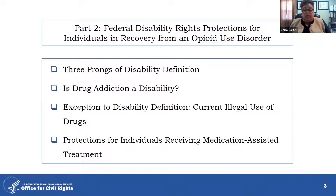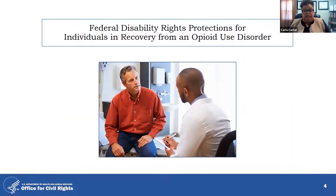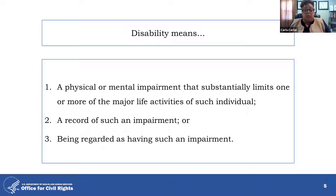Part two of the webinar, Federal Disability Rights Protections for Individuals in Recovery from an Opioid Use Disorder, will focus on the three prongs of the definition of disability, answer the question of whether drug addiction is considered a disability, explore exceptions within federal disability rights laws, and address protections for individuals receiving medication-assisted treatment, also known as MAT. In this section, you will learn how an individual may establish coverage under any of the three prongs of the definition of disability: the actual disability prong, the record of prong, and the regarded as prong.